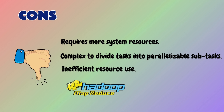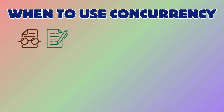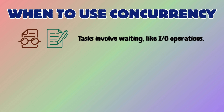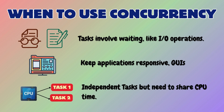Parallelism might also lead to inefficient resource use if tasks are not evenly distributed among processors. Use concurrency when there are tasks involving waiting, like I/O operations, or when we need to keep applications responsive — as in the case of graphical user interfaces.